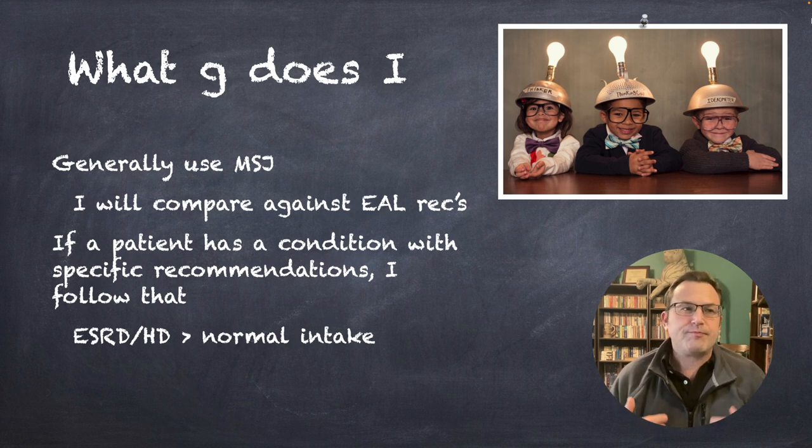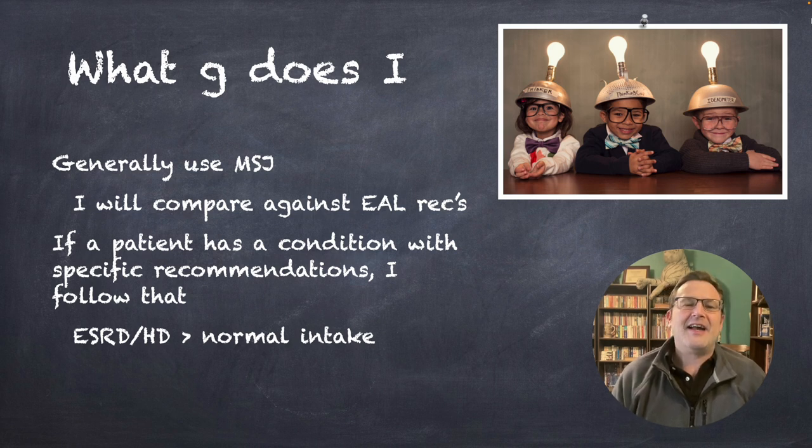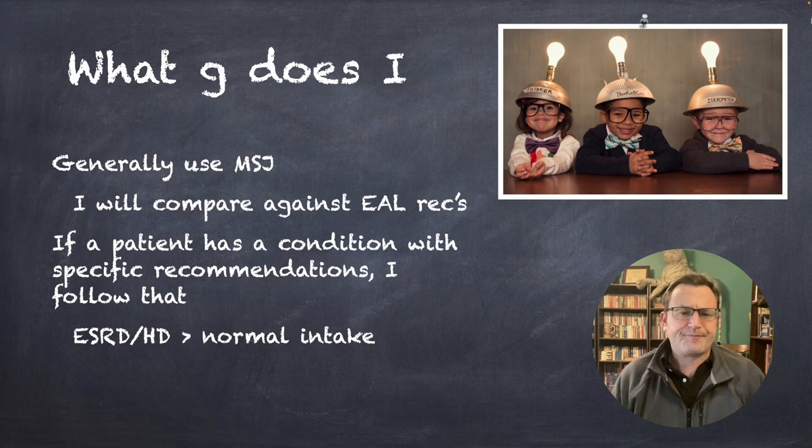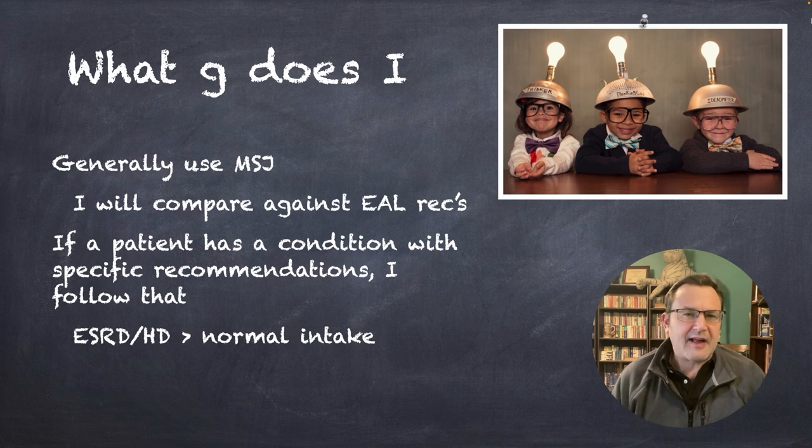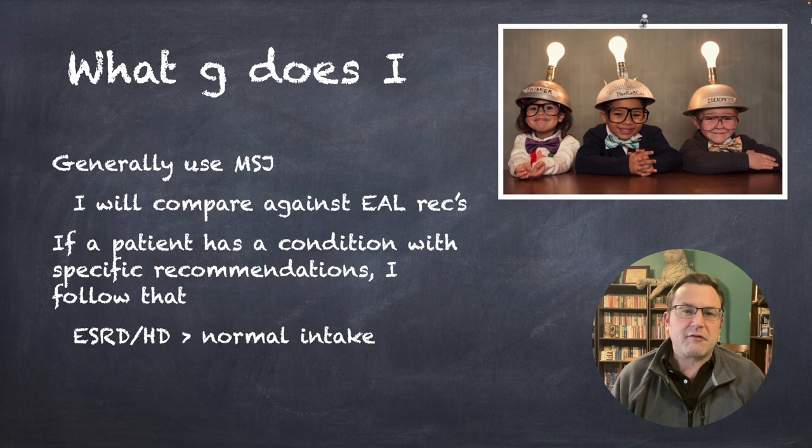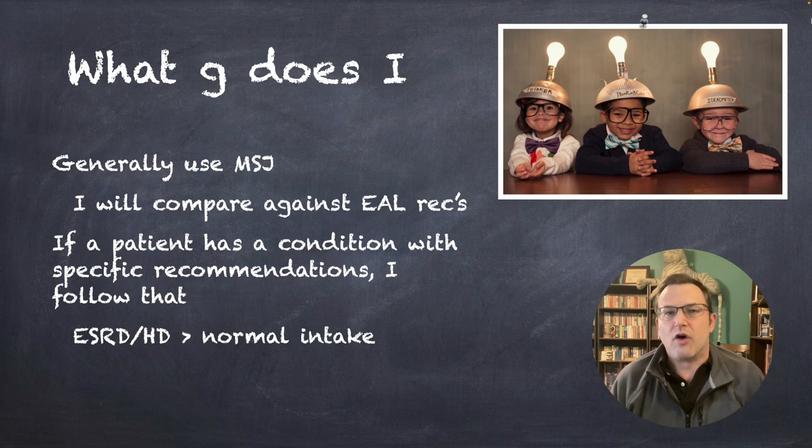So, what do I do? I'm working in long-term care settings, nursing homes, rehab hospitals. I don't have a metabolic cart. I generally use the Mifflin-St. George because that's endorsed by both the Academy and the Healthy Aging DPG. I will often compare it against the evidence analysis library's range. Remember, it's 18 to 22 for women, 20 to 24 for men. If a patient has conditions with specific recommendations, I will follow that instead. For example, if I have a patient on end-stage renal disease on hemodialysis, I will prioritize that over other conditions.